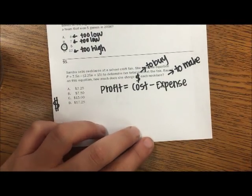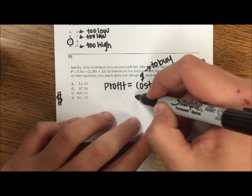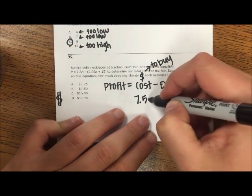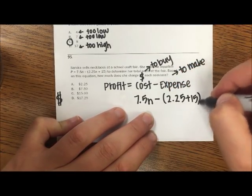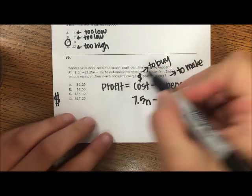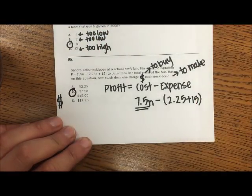Okay. So my cost, let's write 7.5 would be my cost and then minus, and this is my expense. So based on how much does she charge for the necklace, she charges $7.50, B.